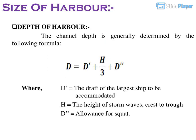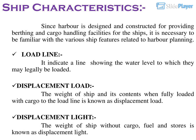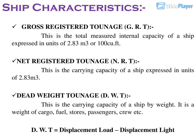Depth of harbour: The channel depth is generally determined by the formula where D = draft of the largest ship to be accommodated, H = height of storm wave crest to trough, and D = allowance for squat. Ship characteristics: Since a harbour is designed for providing berthing and cargo handling facilities, it is necessary to be familiar with ship features. Load line indicates the water level to which a ship may legally be loaded. Displacement load is the weight of the ship and its contents when fully loaded with cargo to the load line. Displacement light is the weight of the ship without cargo, fuel and stores. DWT = displacement load − displacement light.